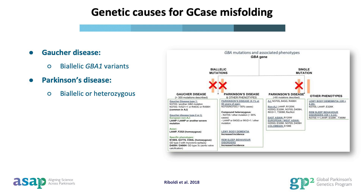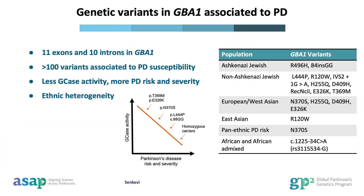From this point onward, we will focus on GBA1 as a risk factor for Parkinson's disease. The GBA1 gene comprises 11 exons — the regions that code for the GCase protein — and 10 introns. A homologous pseudogene called GBA1P is located a few kilobases downstream, sharing 96 percent sequence identity with GBA1, which adds complexity to studying and interpreting GBA1 variants.